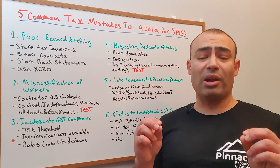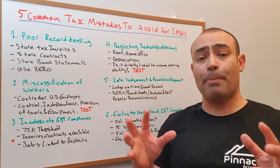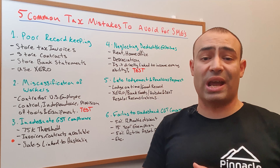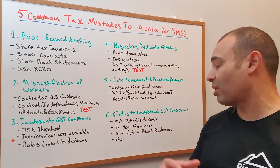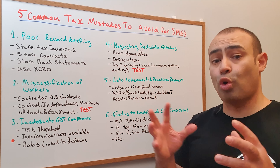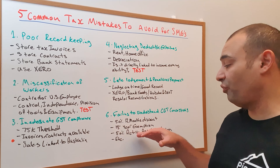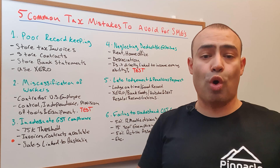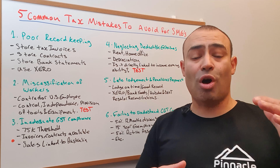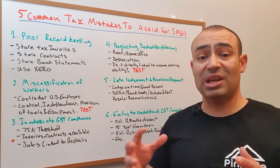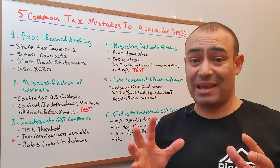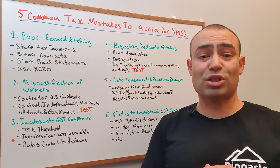Finally, number six is failing to understand capital gains tax concessions for business owners. You can save a large amount of money if you understand these concessions. We have the 50% 12-month discount, the 15-year exemption on goodwill depending on whether you're eligible and qualify based on passing the relevant tests, the 50% active asset reduction, and things like the rollover. These are complex topics, but the key point is that potentially you might be able to sell your business and pay little to no tax whatsoever — and it's something we need to be aware of because the repercussions of getting it wrong are absolutely huge.